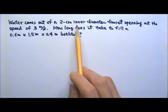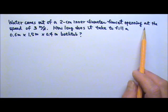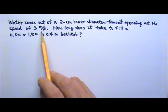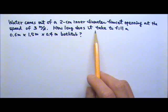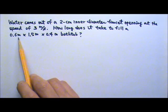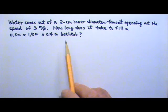Water comes out of a 2 cm inner diameter faucet opening at the speed of 3 m per second. How long does it take to fill a 0.6m x 1.5m x 0.4m bathtub?